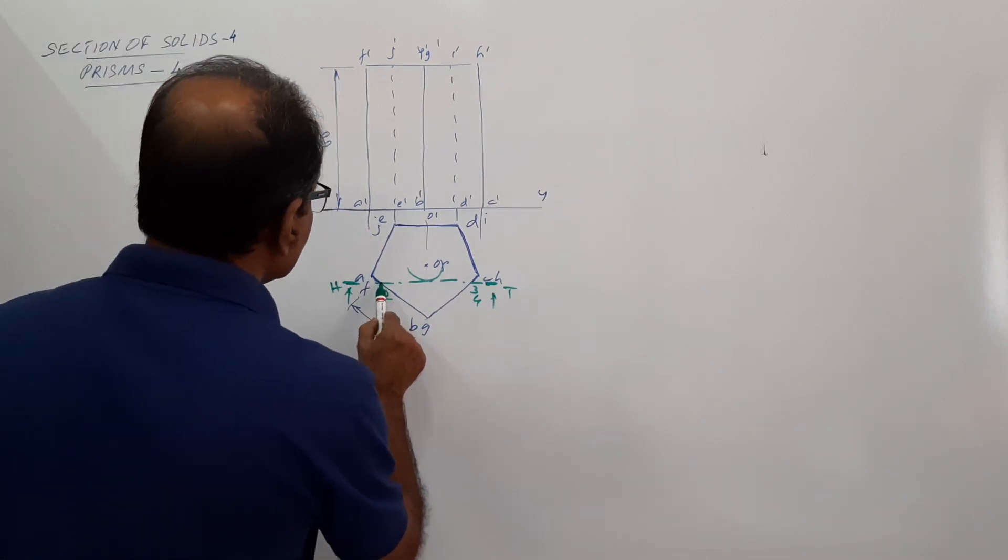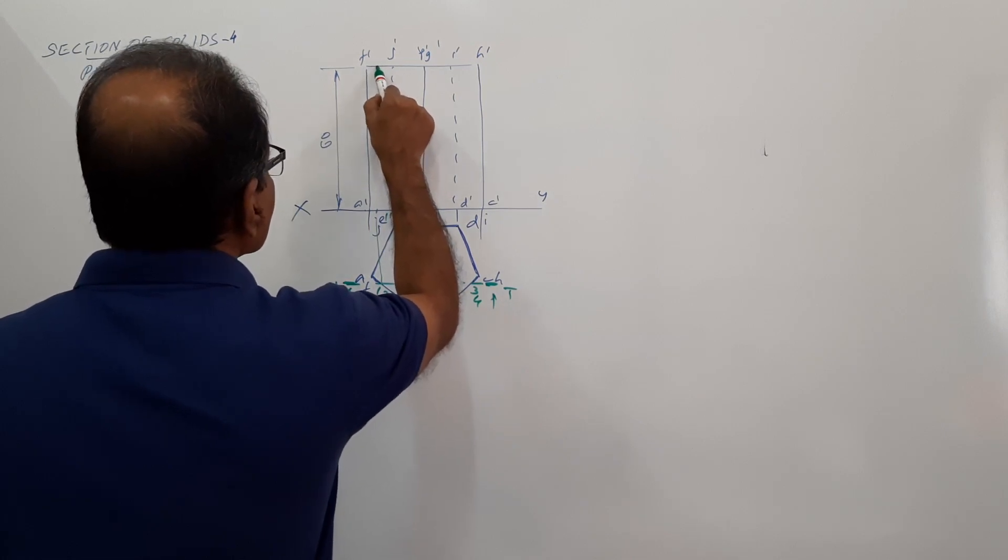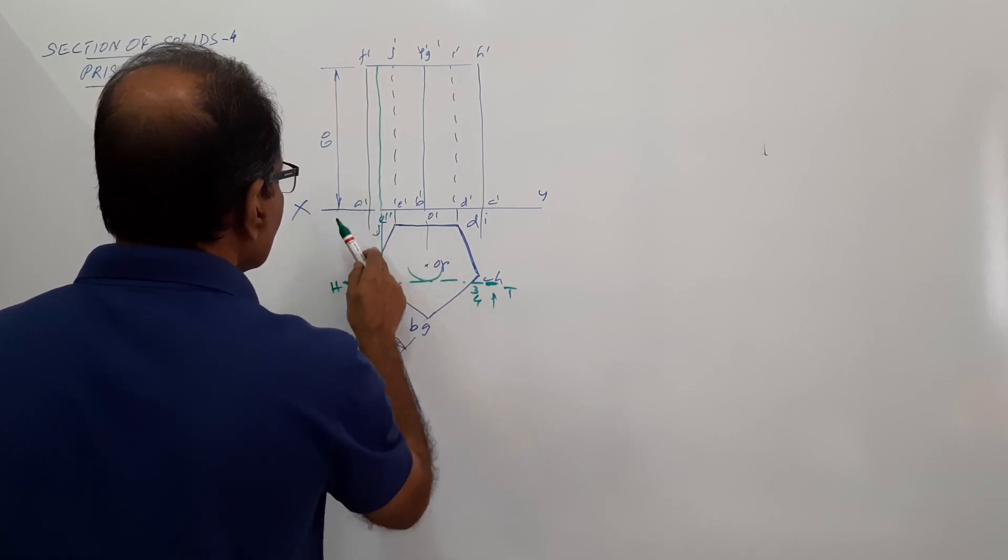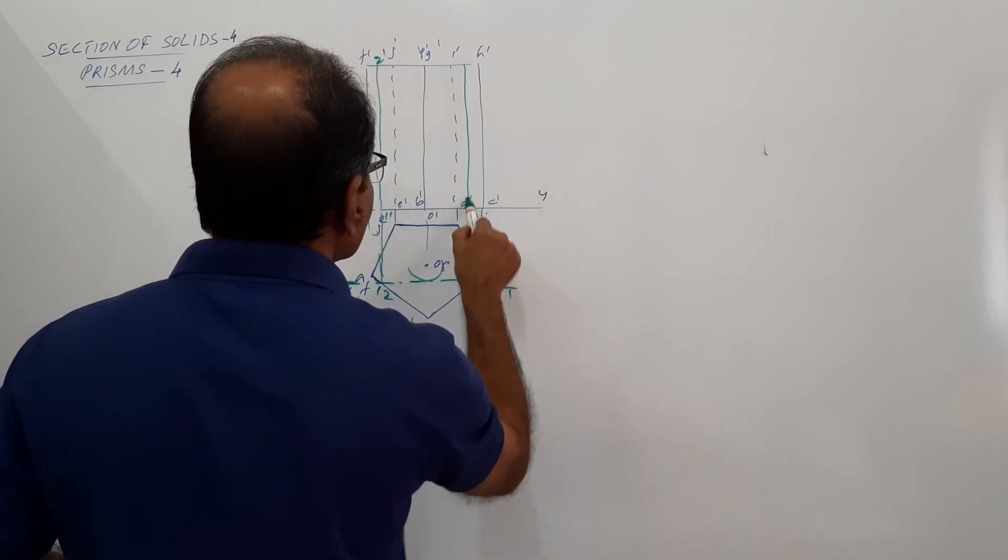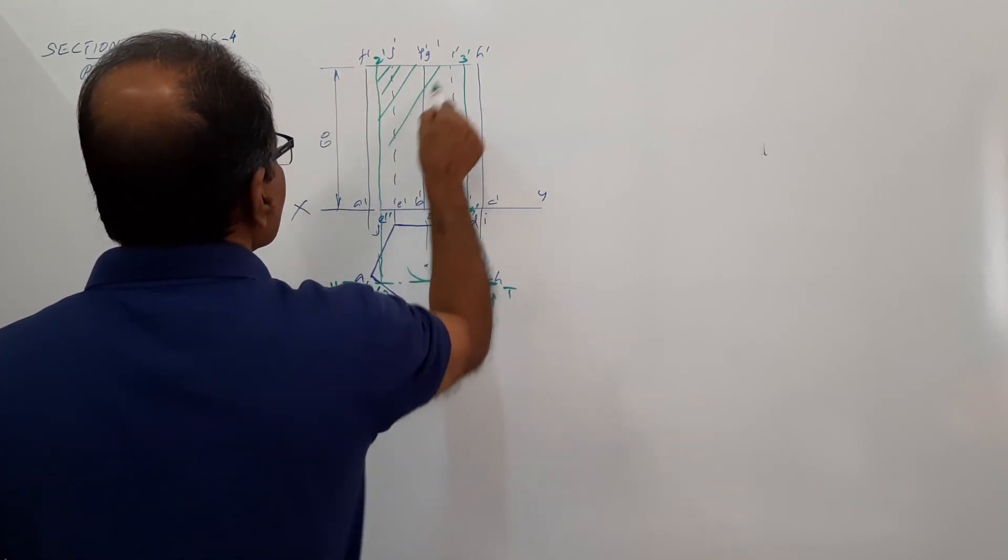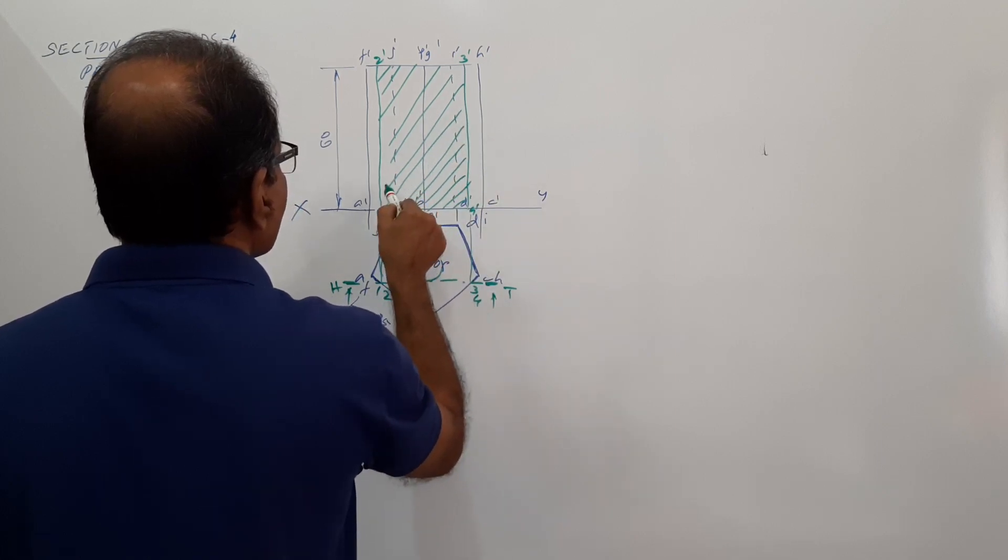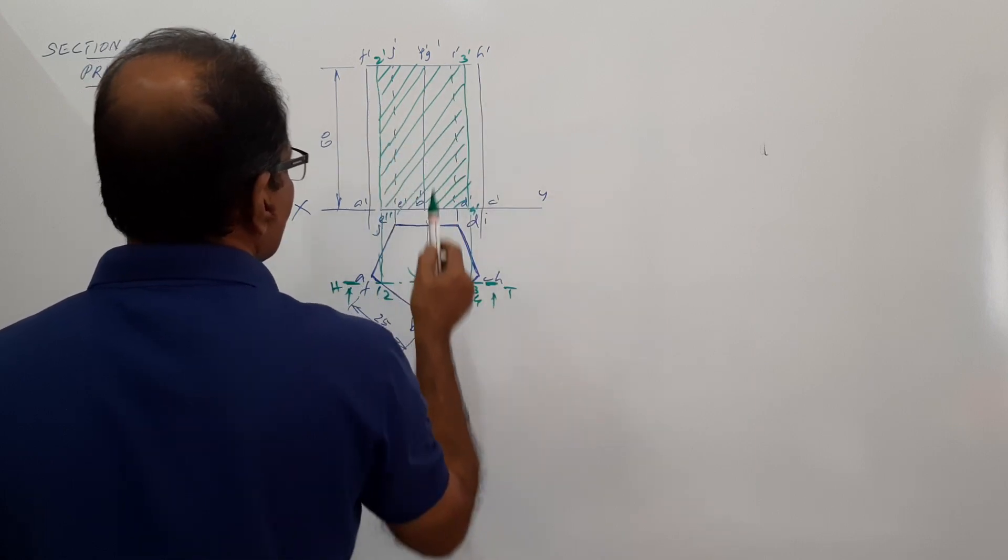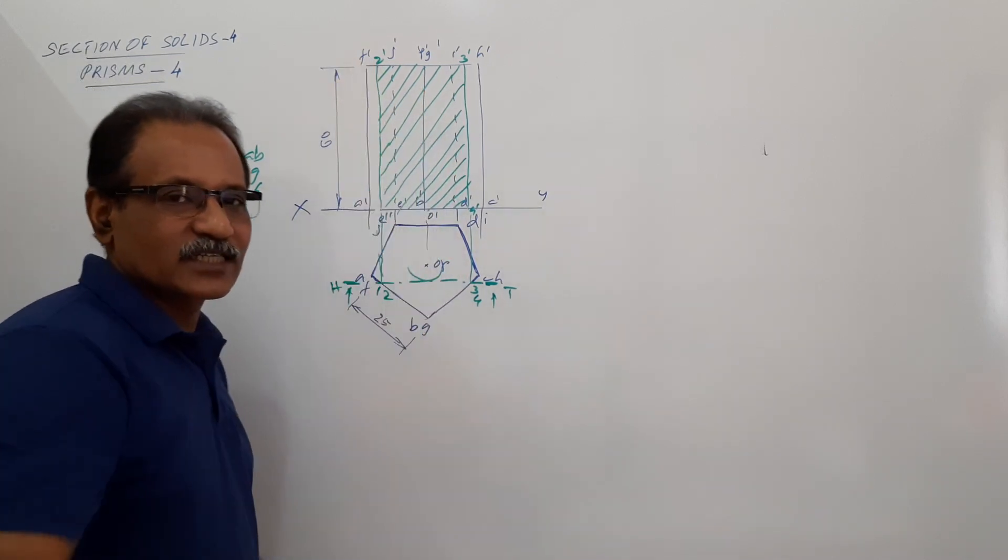What is the detail? Project this. 1 dash right above, 2 dash, 3 dash, 4 dash. How is this? At 45 degrees to the XY line. You have completed the sectional elevation. You have drawn the sectional elevation.